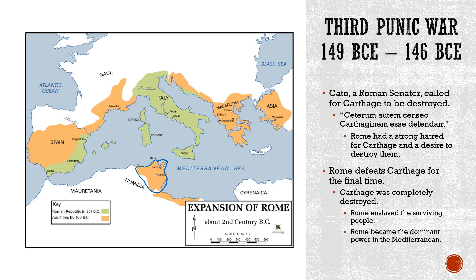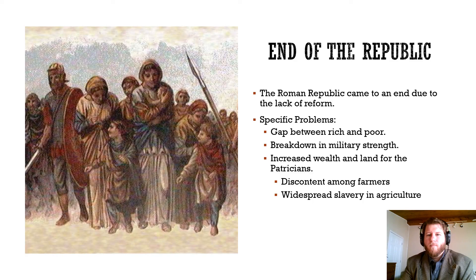That last bit about the salt probably isn't true, since the Romans will actually rebuild Carthage later themselves. But the story tells us just how much hatred they had for the Carthaginians. After this, Rome is going to control pretty much the entire Mediterranean — the only piece left is Egypt. And don't worry, they'll add that to their mantle soon enough.